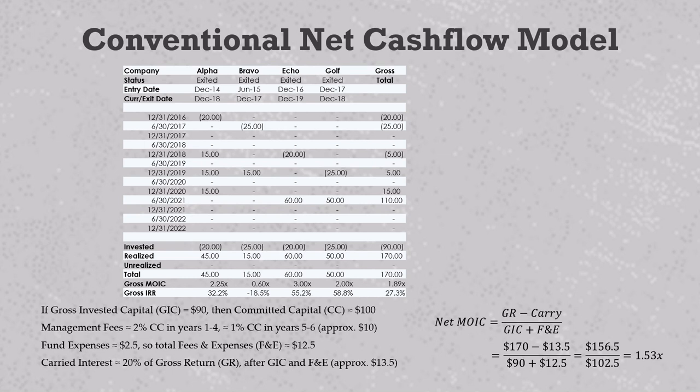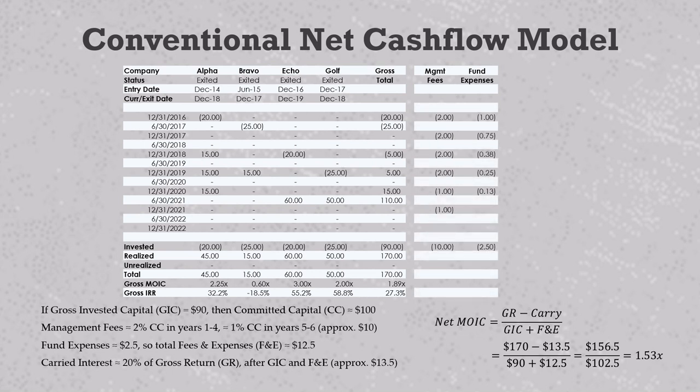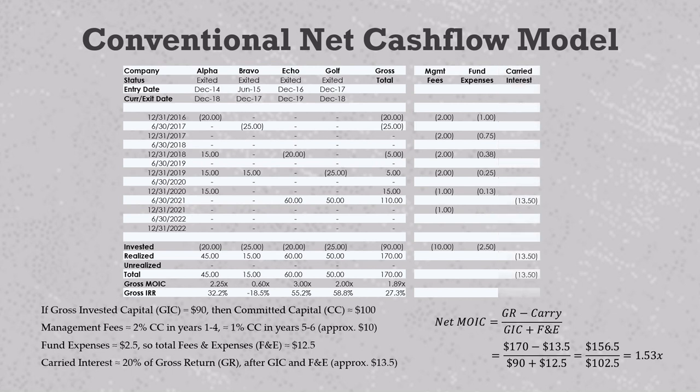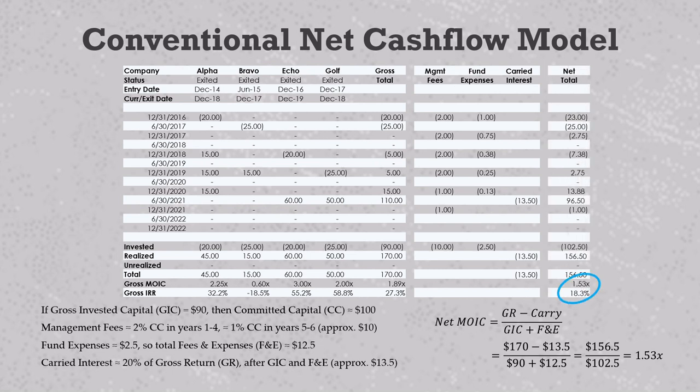To calculate the net IRR, we must add a date to every deduction. We'll use the same timing for both the management fees and expenses. One thing we noticed is that we're charging a fee in December 2021, which is six months after the portfolio is fully realized. That usually wouldn't happen in a real fund, but we'll just leave it as is because it's probably not worth making any kind of manual adjustment for it. For carry, we'll deduct the $13.5 million at the June 2021 exits. This gives us the following hypothetical net cash flows with a 1.53x net multiple and an 18.3% net IRR.